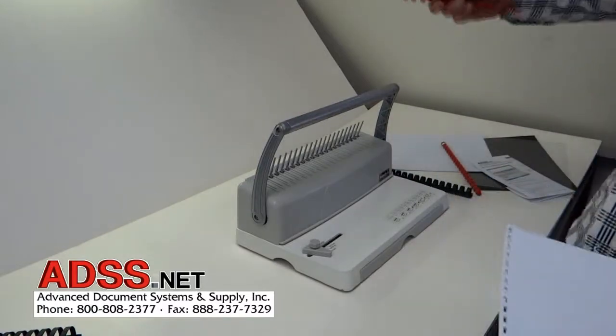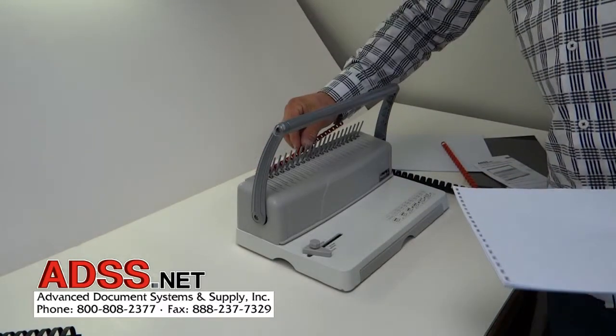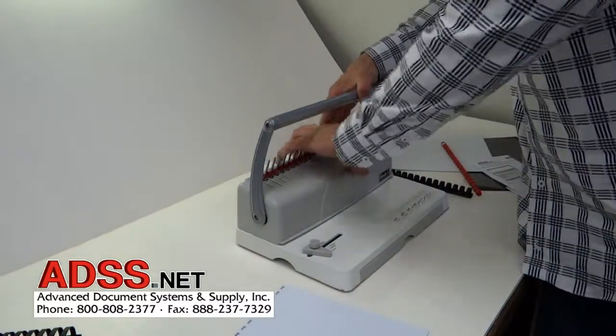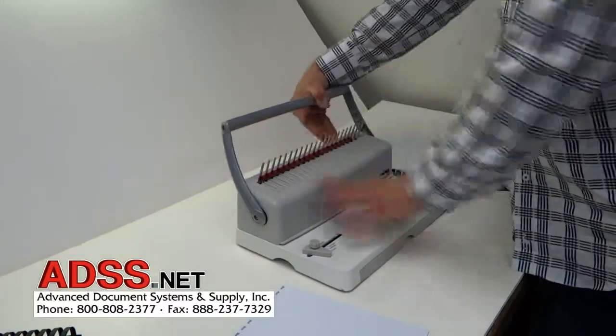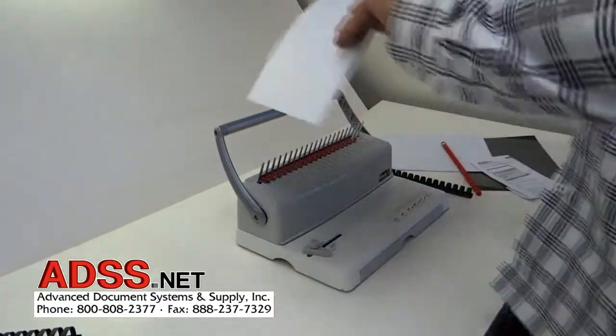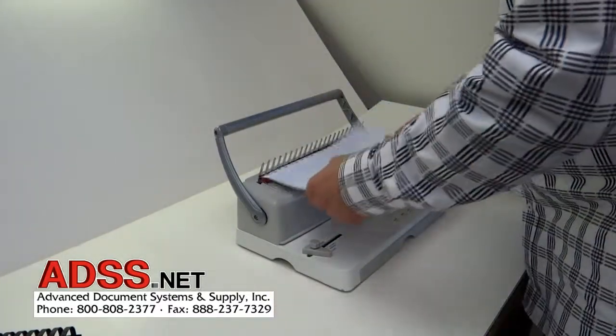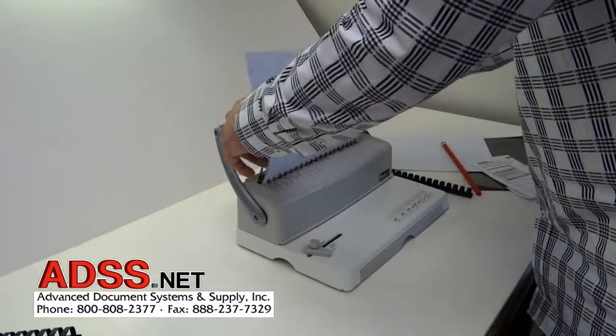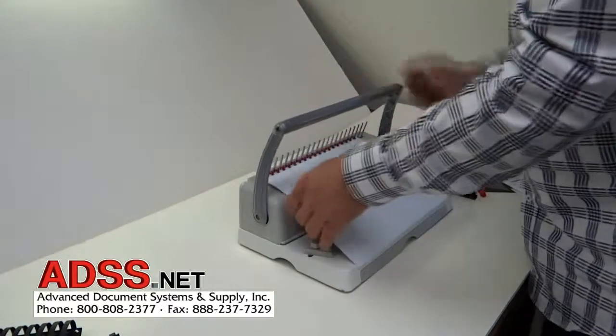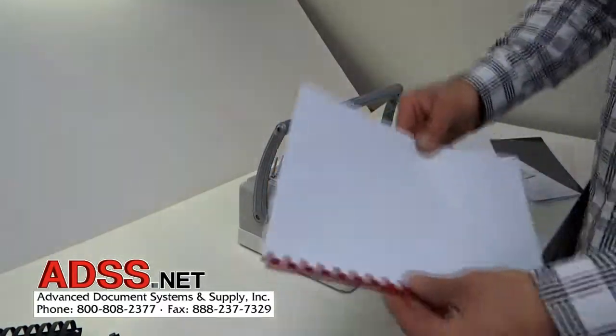Then you insert your plastic comb into the top of the machine with the teeth up and you just insert it here and pull it open as such, and you insert the pages over the teeth. And voila! Lift it up and you've got a comb-bound document.